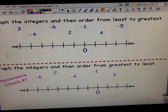Let's do an example. We're going to graph these integers and then order them from least to greatest. So we're going to use our number line. You need to make sure you put this example in your notes. Here's 3. It's a positive. That means it's going to go to the right 3 units.